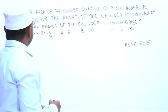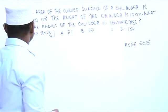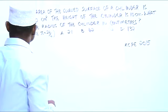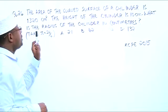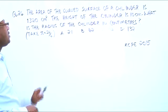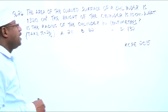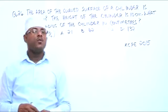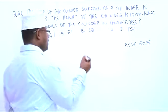The area of the curved surface of a cylinder is 1320 cm². The height of the cylinder is 10 cm. What is the radius of the cylinder in cm?